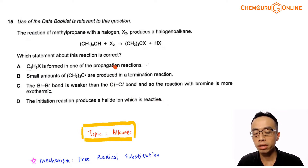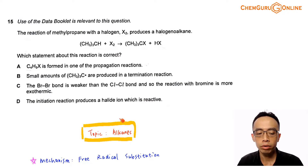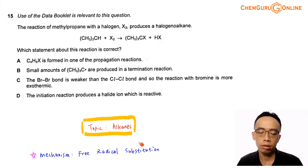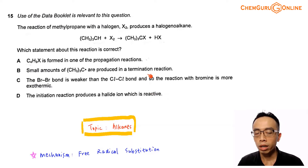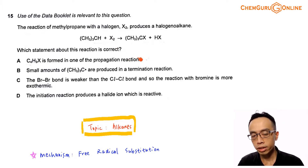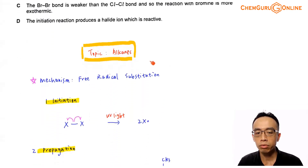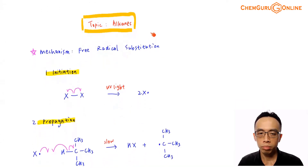The statements in the options suggest we have to refer to the mechanism for alkanes. The topic tested in this question is under alkanes, and we have to link it to the mechanism, which is free radical substitution. Let us run through the mechanism for methylpropane and consider how we form the halogenoalkane product.